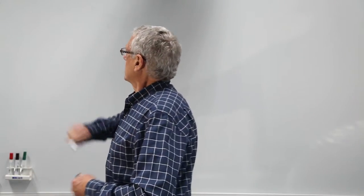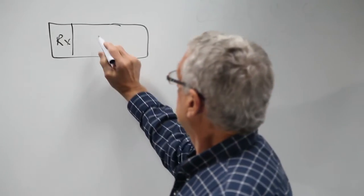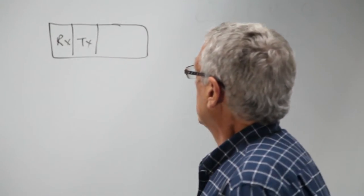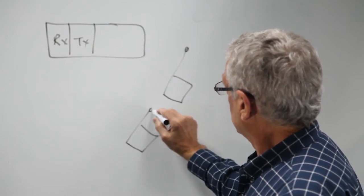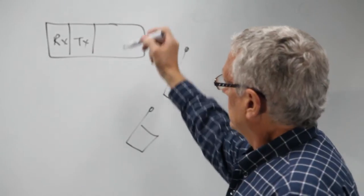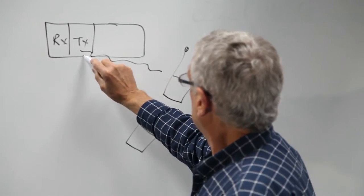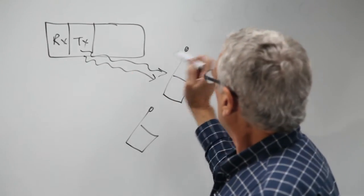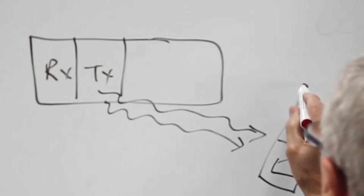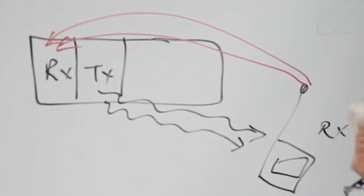Let's have a look at that. Here is a base station split into a receiver and a transmitter. Here we have some portable radios. Typically, the transmitter will transmit and the portables will receive. The portable, when it transmits back, will transmit and it will be picked up at the receiver.